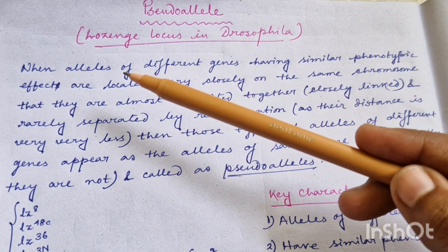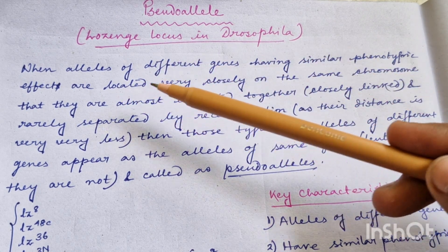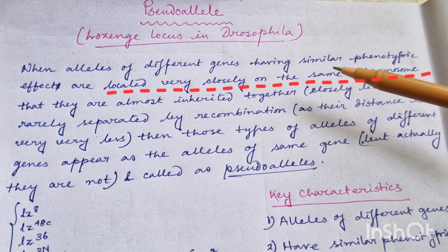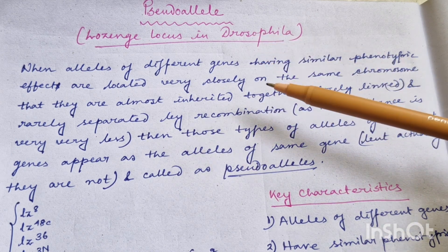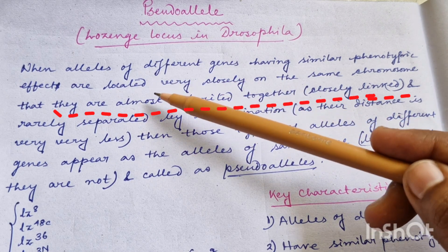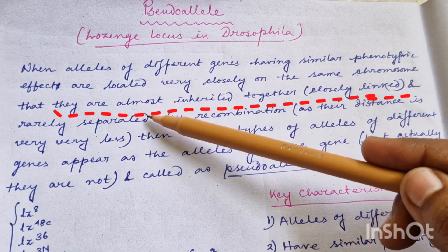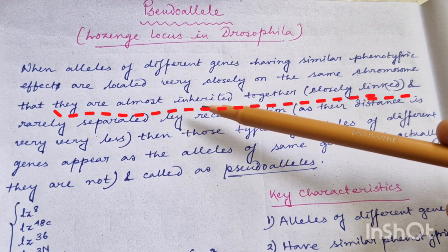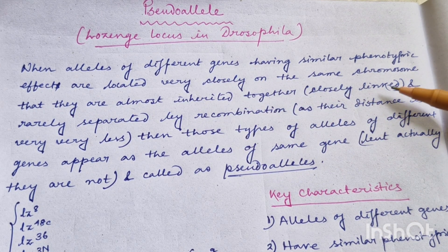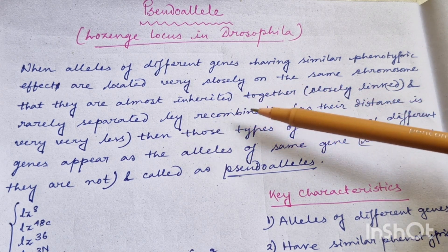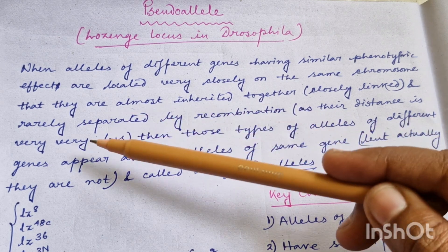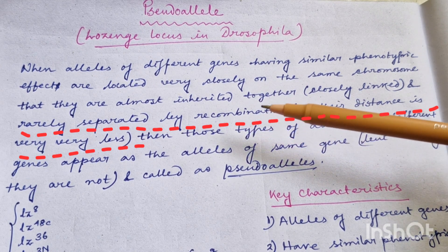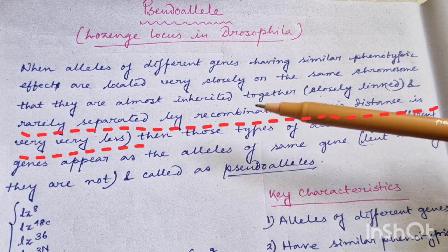There are several other characteristics. These alleles of different genes with similar phenotypic effect are located very closely on the same chromosome. As they are located very closely on the same chromosome, they always tend to be inherited together — almost inherited together. You have to give importance to the term 'almost', because they are not always inherited together, but maximum time they tend to be inherited together as they are very closely linked.